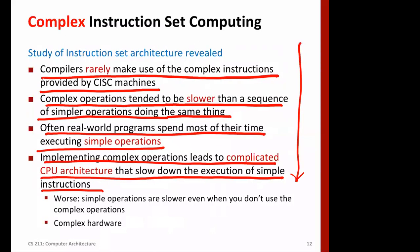Why does CISC take more time to execute simple instructions? You have to compare it with RISC architecture. You have a limited amount of hardware, and since you have to implement complex instructions as well, you cannot focus as much on the design and implementation of simple instructions. So less hardware is available for simple instruction execution compared to what you can do in RISC architecture.